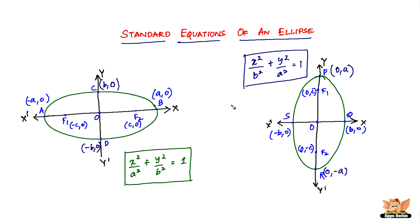These are the two standard equations of an ellipse which you really have to memorize and get familiarized with. When you see a horizontal ellipse, use x squared by a squared plus y squared by b squared equals one. When you see a vertical ellipse, use x squared by b squared plus y squared by a squared equals one. That ends this video on standard equations of an ellipse — see you in the forthcoming videos with more concepts and problems.